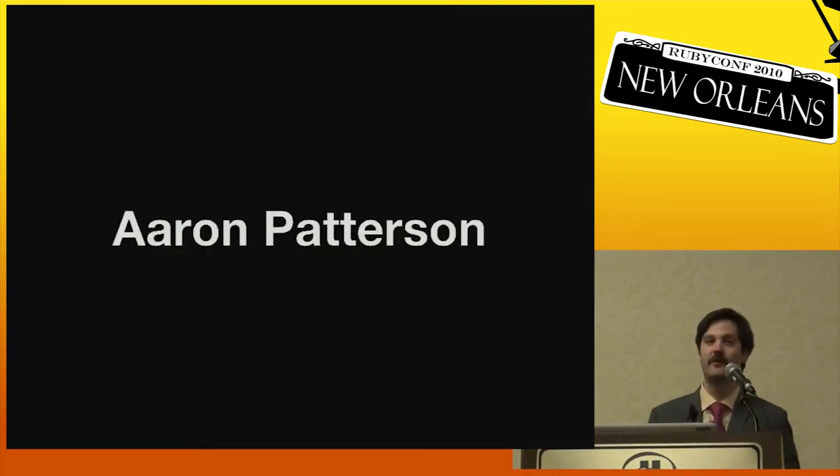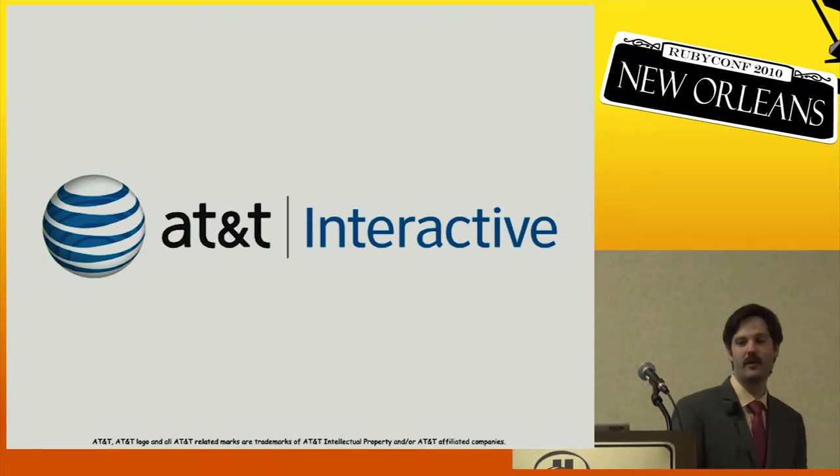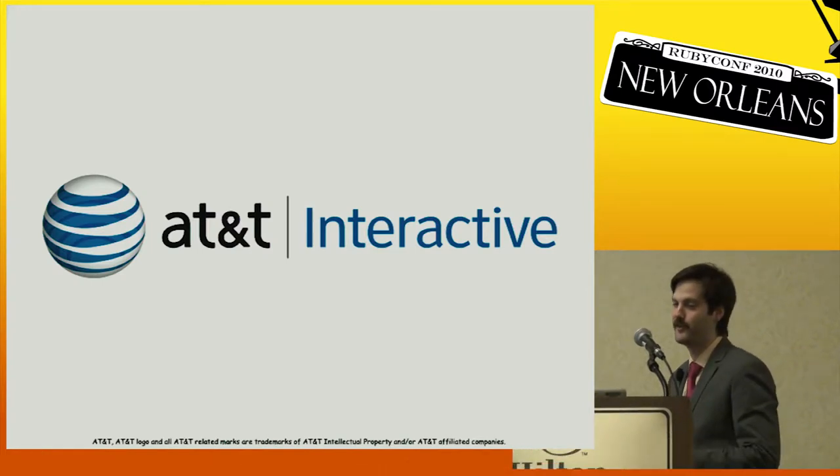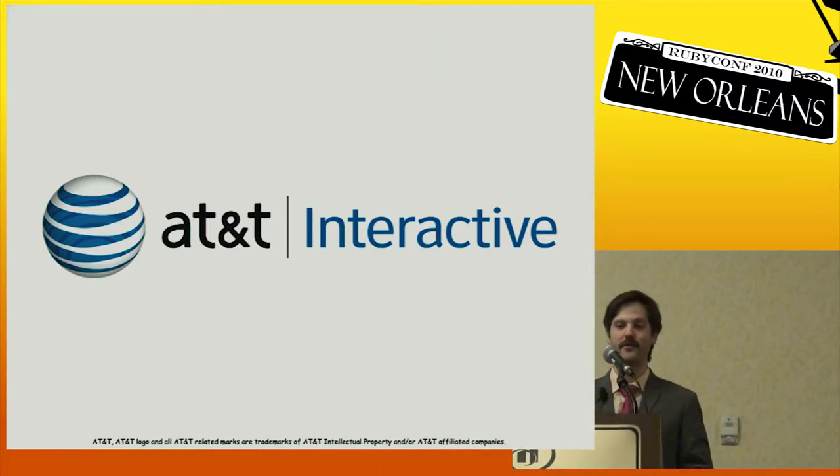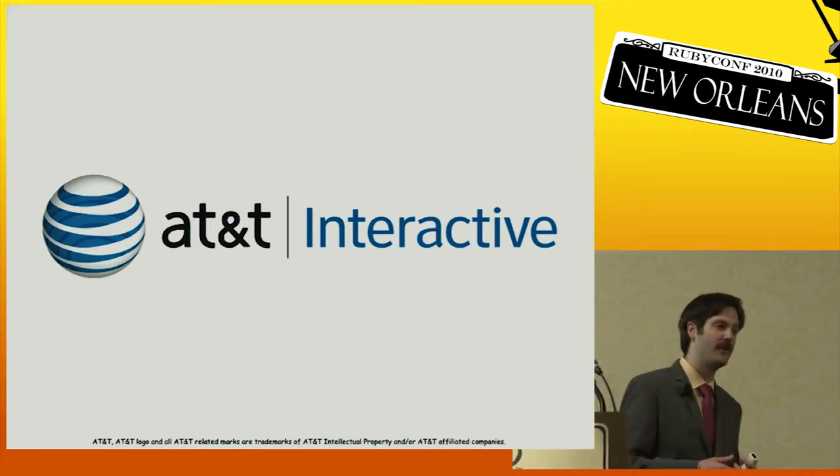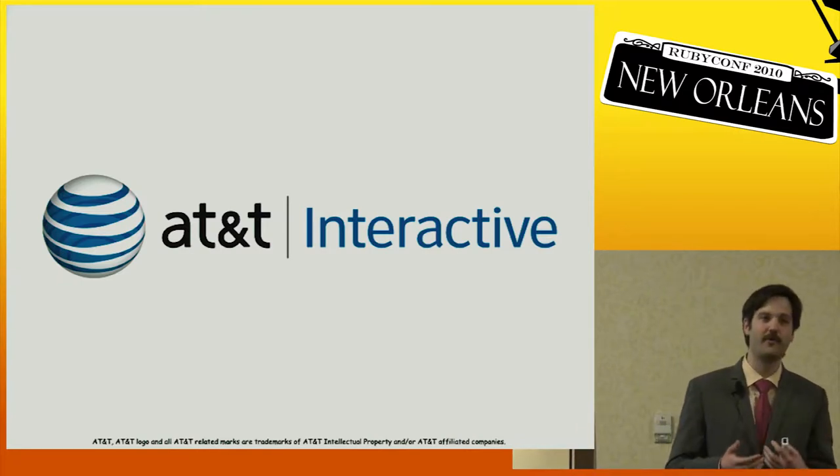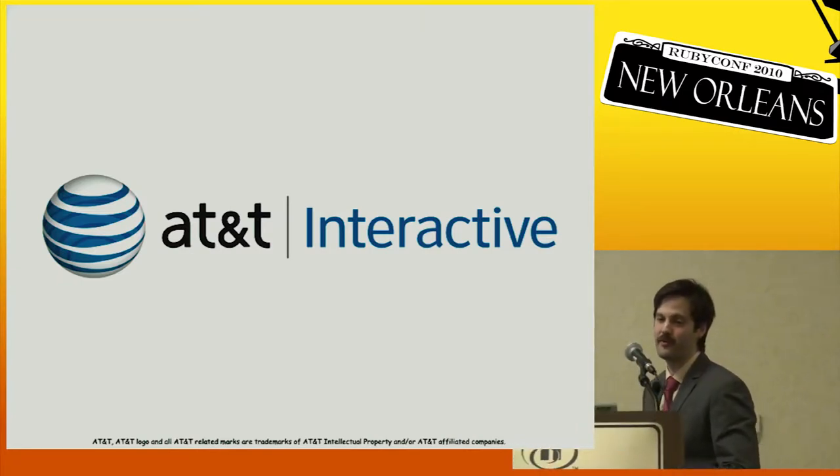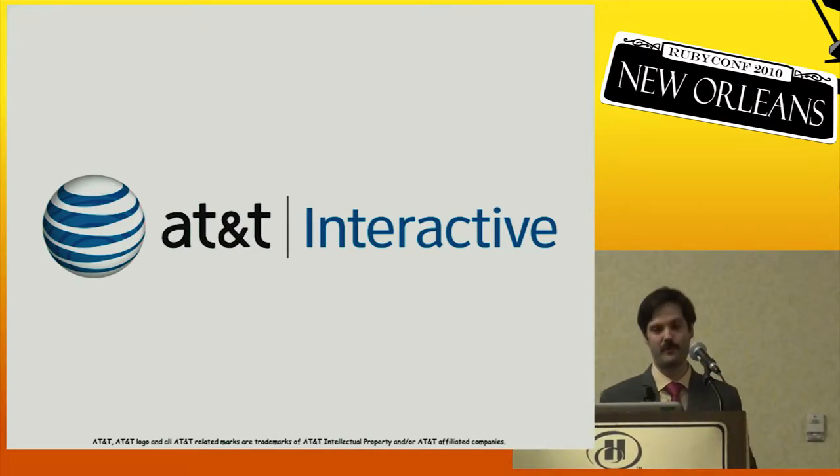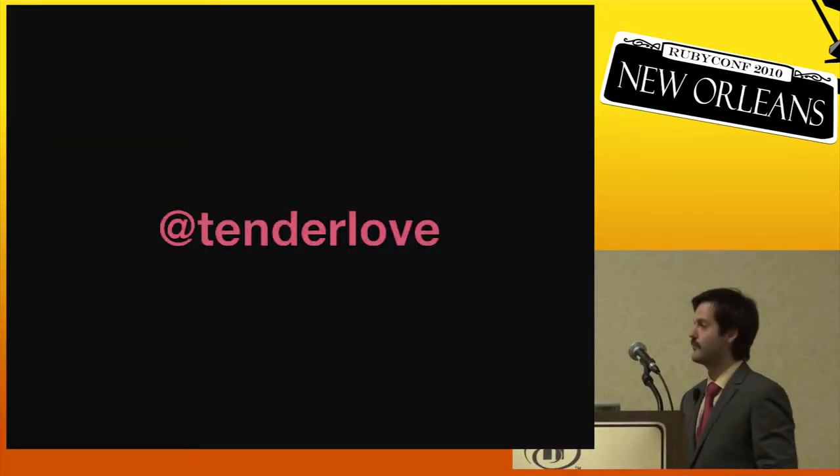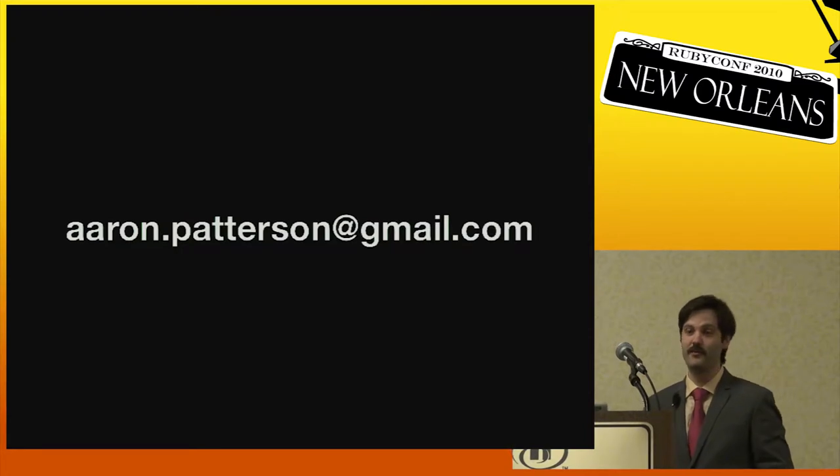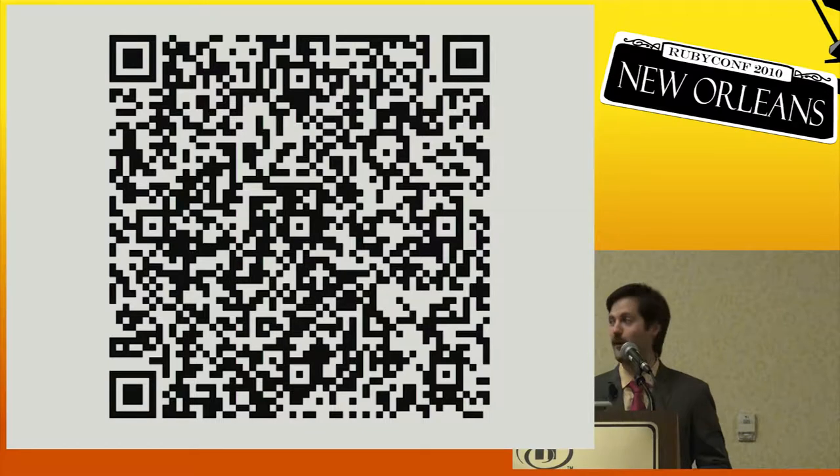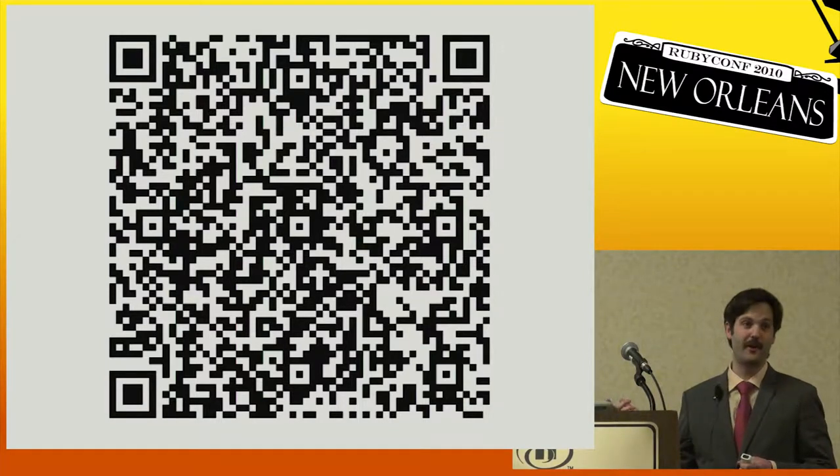My name is Aaron Patterson. I work for a company called AT&T Interactive. I am paid to work on open source software every day. We use a lot of Rails at work. Mainly I work on Rails because if I improve Rails, then hopefully the applications within our company will improve. My Twitter address is Tenderlove. My email address is this, and if you have a phone that can read QR codes, you can get my vcard here.